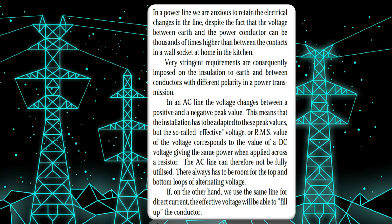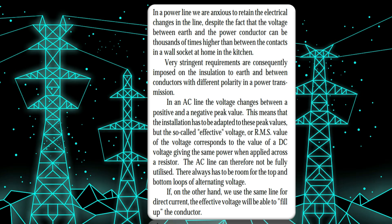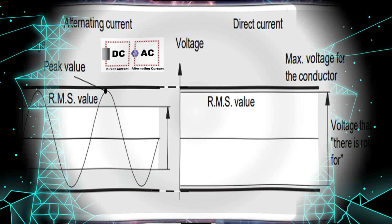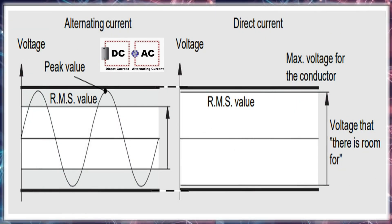A bipolar HVDC configuration only requires two cables compared to a double-circuit AC line which requires six cables. This leads to smaller right-of-way requirements. For remote areas, this factor can significantly contribute to reduced installation and overall costs.